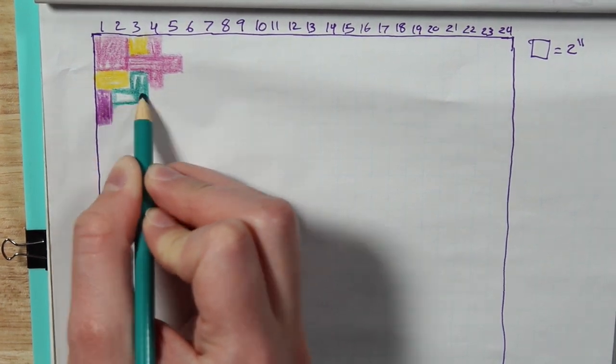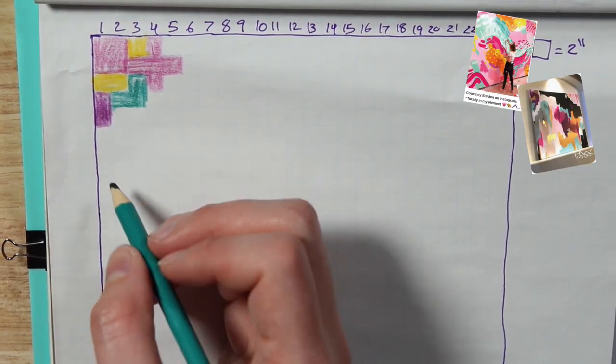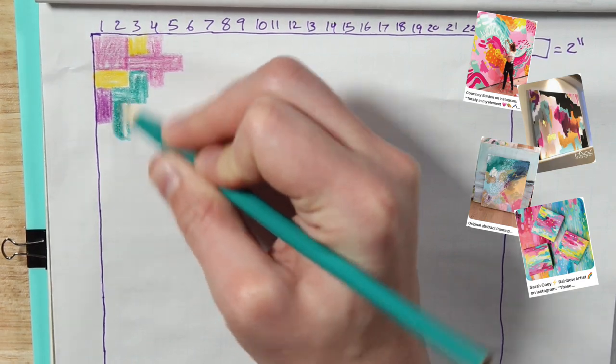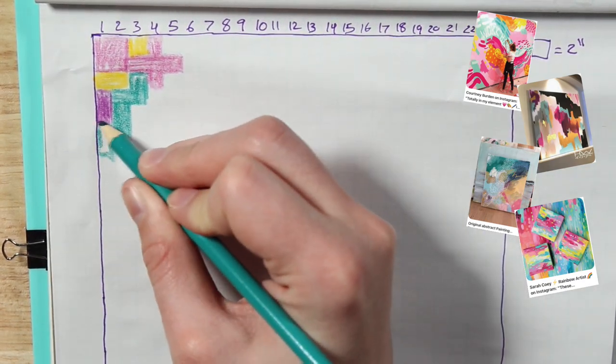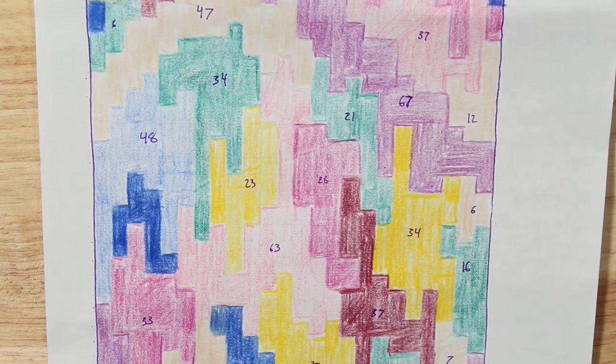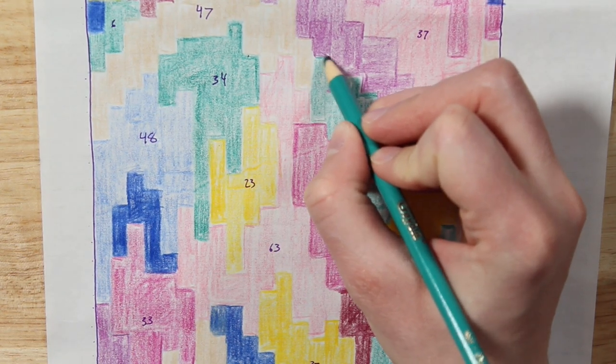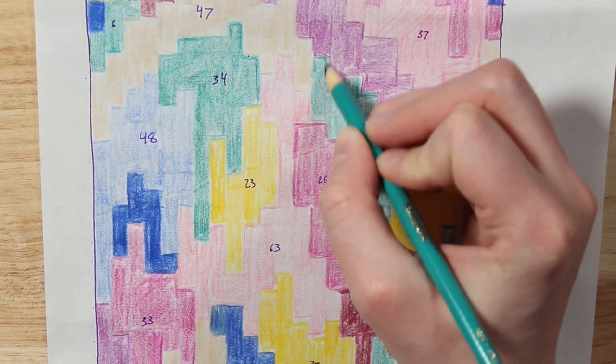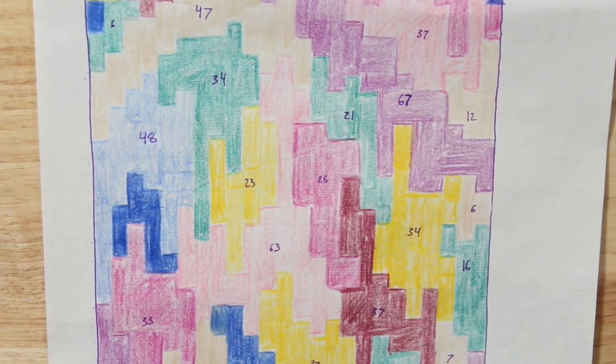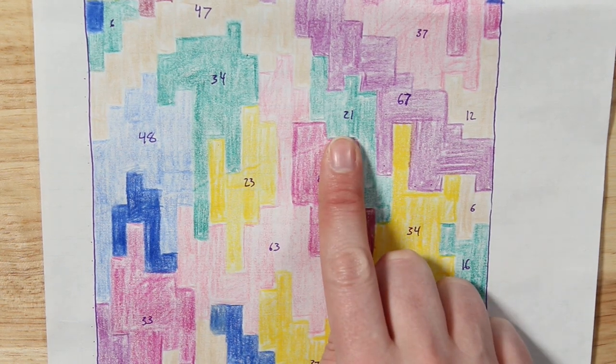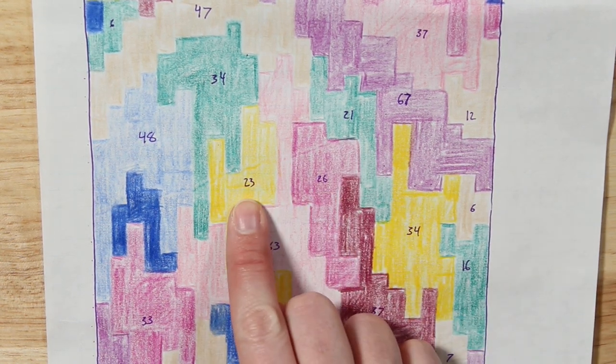Once I had figured all of that out, I took to Pinterest to find some modern art inspiration. And once I found some colors and some ideas that I liked, I interpreted that into the graph paper. After I had figured out the entire design, I went back and numbered each section of color. And this helped me figure out how many strips of each colored paper I would need to get.